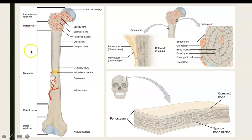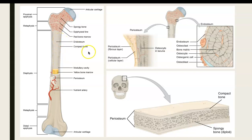Where the metaphysis meets the diaphysis, the bone becomes completely hollow. The hollow portion of the bone is referred to as the medullary cavity. Notice that it's surrounded or ringed by compact bone, and this compact bone is what actually gives the bone all of its strength. The fact that it's hollow makes it nice and light. The medullary cavity also provides a place for storage of fat, so the medullary cavity and the diaphysis is filled with yellow bone marrow, while the metaphysis and epiphysis is filled with red bone marrow.